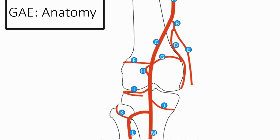Let's talk about the relevant arterial anatomy when performing a genicular artery embolization. There are going to be six arteries of interest, denoted in red lettering. The black lettering indicates arteries you should be aware of, but aren't necessarily involved with embolization specifically.